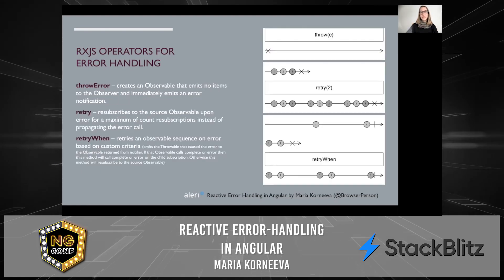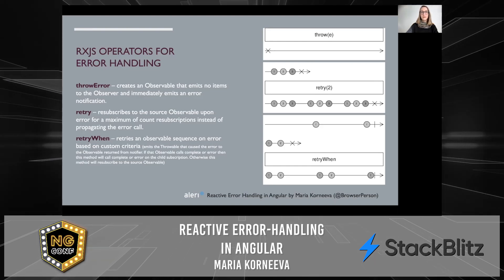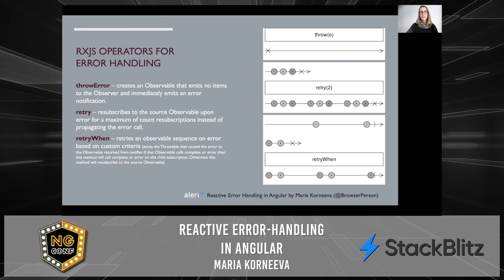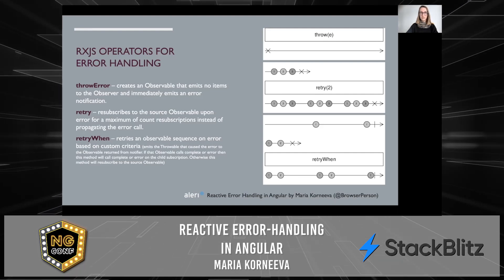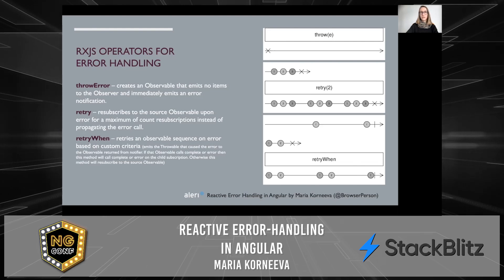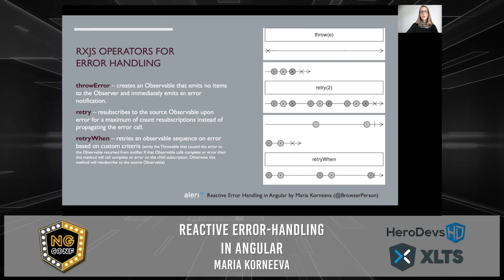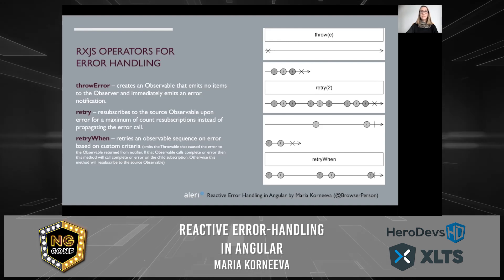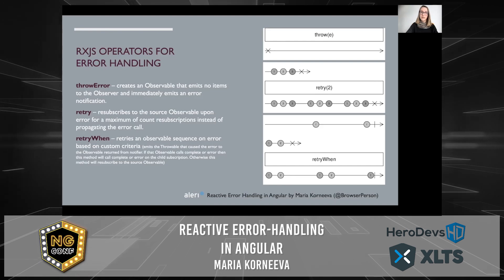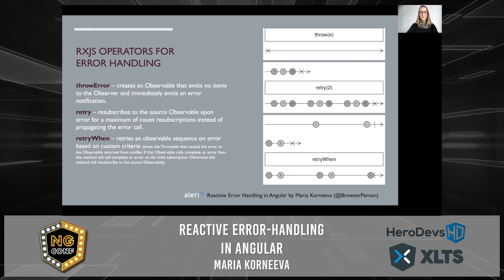Here are further RxJS operators for error handling. For example, you can use throwError if you need to propagate the error and handle it in your component — that would be the catch-and-re-throw strategy. The marble diagram for this is very simple. retry and retryWhen help you to increase the success rate of your requests; however, you still have to decide what you'd like to do with your error if it happens again — replace it or re-throw it. Now we're ready to have a look at the code.